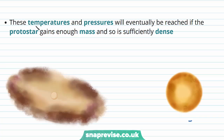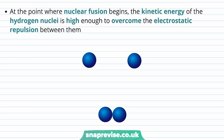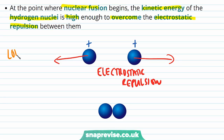In order for nuclear fusion to occur, the temperature and pressure inside the core of the protostar need to be extremely high. These high temperatures and pressures will eventually be reached if the protostar gains enough mass and is sufficiently dense. As mass is attracted towards the core, it increases density ρ, and therefore temperature and pressure both increase, leading to the formation of a star. Why do we need such high temperatures for nuclear fusion? At the point where nuclear fusion begins, the kinetic energy of the hydrogen nuclei must be high enough to overcome the electrostatic repulsion between them. Recall that hydrogen nuclei have a positive charge, so they experience a force of electrostatic repulsion moving them away from each other. At low temperatures, the kinetic energy of these hydrogen nuclei is not strong enough to overcome this repulsion, so nuclear fusion cannot take place.